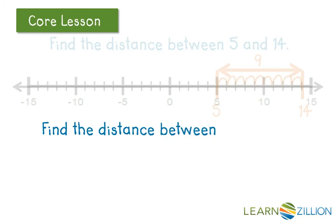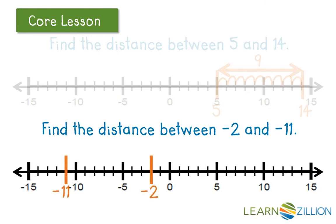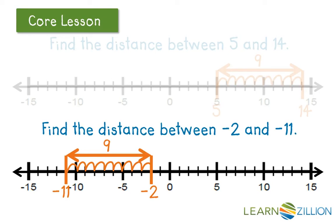Let's try an example with two negative numbers: negative 2 and negative 11. We can graph them both on the number line, and we can see that they are a distance of 9 apart. It doesn't matter whether I count from right to left or left to right — it's still a distance of 9. It would matter if I was finding the difference. Negative 2 minus negative 11 is positive 9, but negative 11 minus negative 2 is negative 9. While the difference may be positive or negative, the distance between them is always positive.